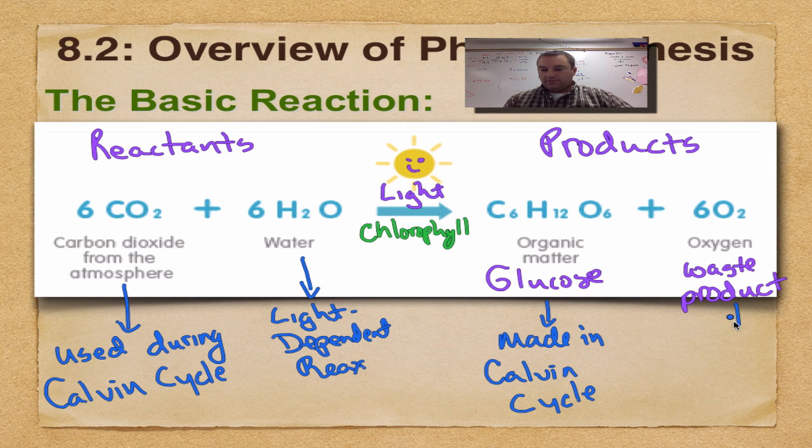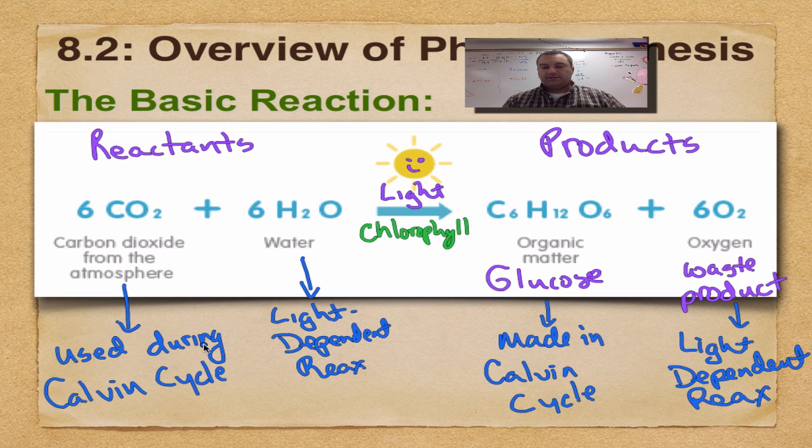And then the waste product oxygen - that's produced during the light dependent reactions also. So as you can clearly see there's two steps of photosynthesis: the light dependent reactions and the Calvin cycle. And obviously the light is used during the light dependent reactions. Let's look at those two steps in just a little bit more detail.